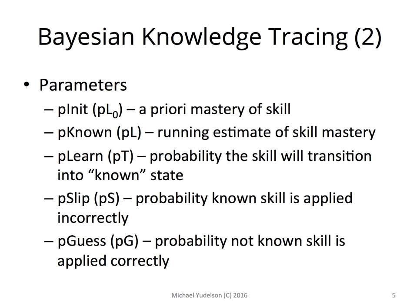Knowledge Tracing tracks four parameters: the initial or running estimate of a student's knowledge of a skill, the probability of learning the skill in every attempt, and slipping and guessing probabilities while practicing the skill.